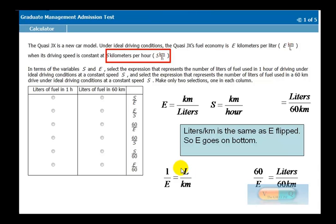Another way to look at this is, 1 over E gives you liter per kilometer. Now, that's just for 1 kilometer. If you want to do 60 kilometers, you're going to need 60 as much 1 over E. So 60 times 1 over E is the same thing as 60 divided by E.